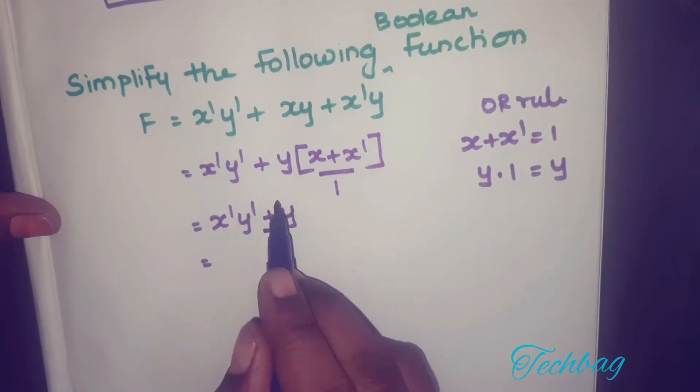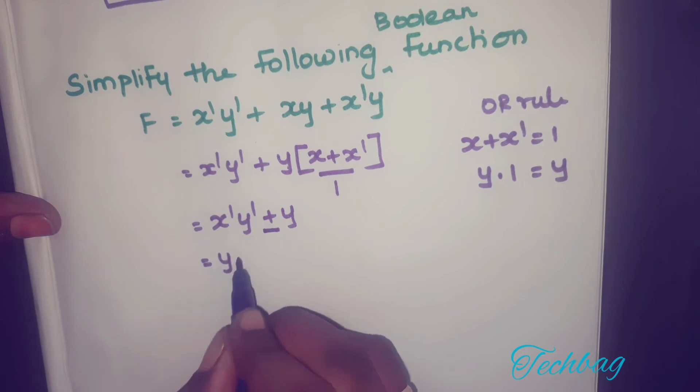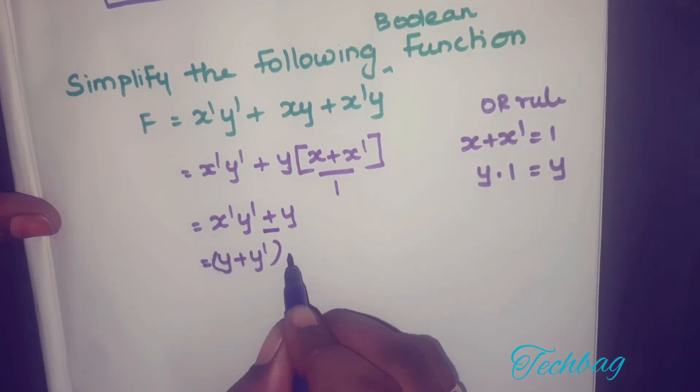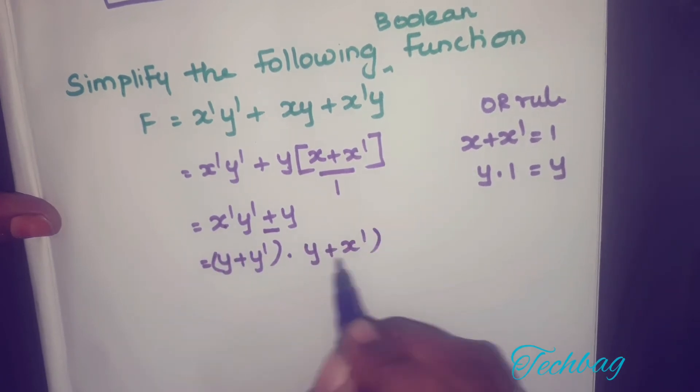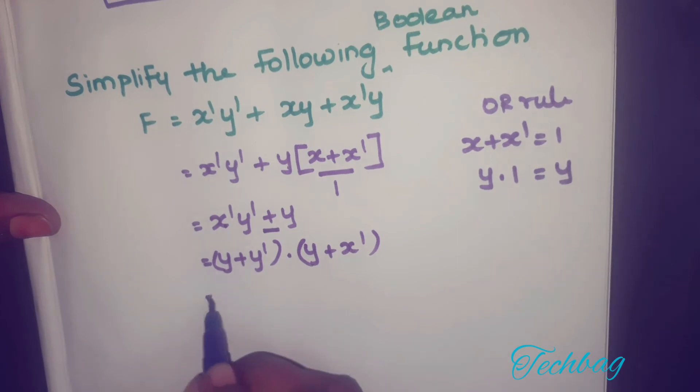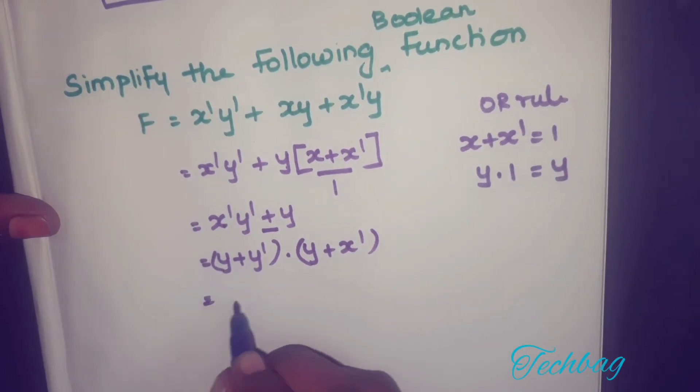If you apply distributive property with respect to OR, then you get: y + first variable is y, y'·y + second one is x', y + y' = 1, so you get 1·y + x'.